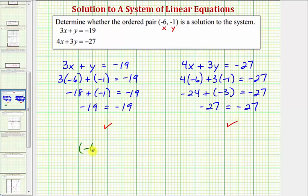So negative six comma negative one is a solution to the system.